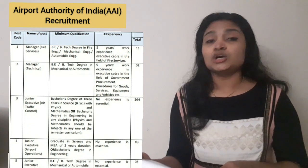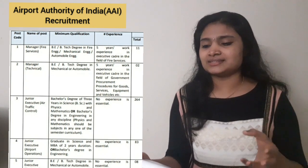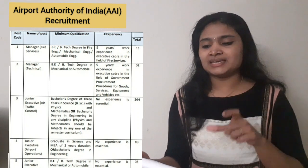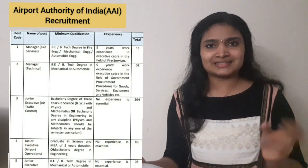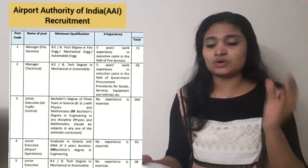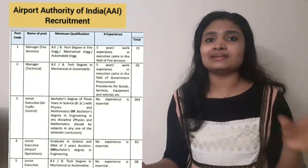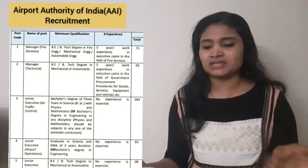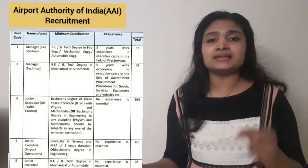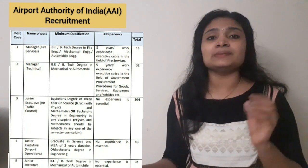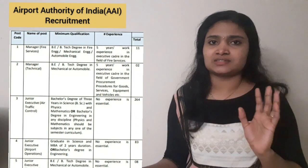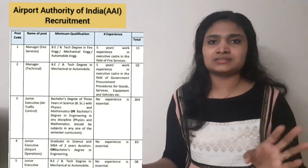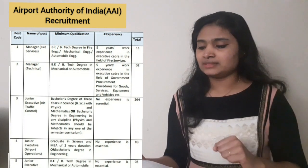For Junior Executive Air Traffic Control, the qualification required is BSc in Physics or Maths, or a BE/B.Tech degree in any discipline — electronics, mechanical, or any branch — provided you have studied Physics and Maths subjects in any of the semesters. No experience is required; it is open to freshers.